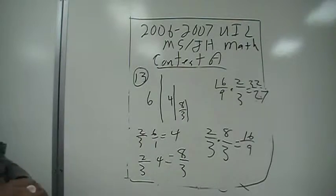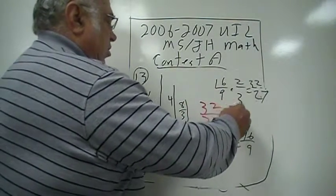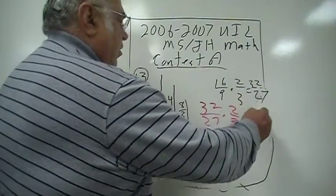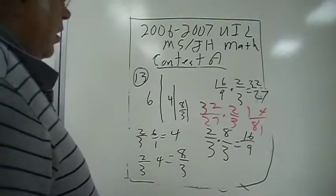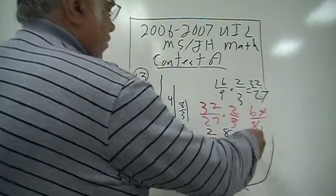So then if I take 32 over 27 and multiply that by two-thirds, this is 81 and this is two twos is four, two threes is 64 over 81.